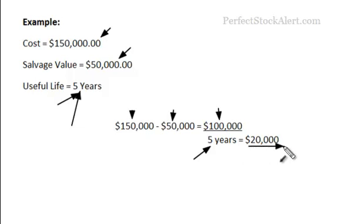So in the first year, you would write down $20,000. In the second year, another $20,000. And if you wanted to, you can get the accumulated depreciation by simply adding those two years together — so we've written off a total of $40,000. That would be the accumulated depreciation.